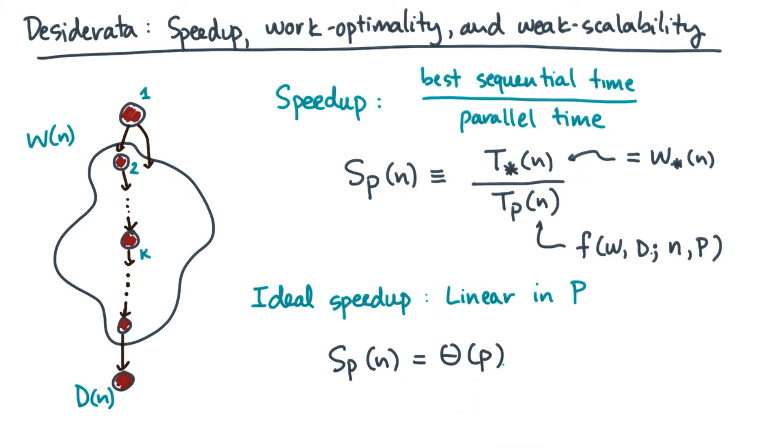Here, I'm using big theta notation because you usually won't care about the constant factors, at least not at this pencil and paper algorithm design stage. Now, essentially what this says is if p doubles, then you want Sp to also double. Of course, that's an ideal. We might not always achieve it.